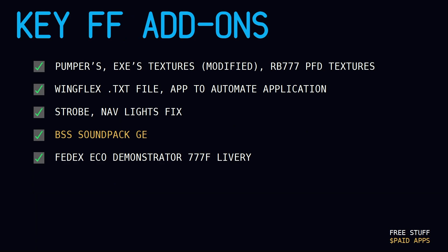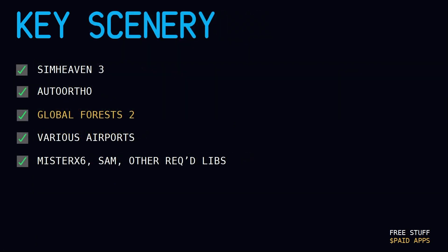And then last, we are going to be using the FedEx Echo Demonstrator 777 freighter livery from FS Cabral — I found it on Threshold X. We do have scenery that we're going to be using. I use SimHeaven 3 and AutoOrtho. It does take a fair amount of space and some time to load up, but it really makes the scenery look great. I'm using a paid program called Global Forests 2, which makes sure that you have the right trees in the right part of the year and part of the world, and generally makes things look a little bit more realistic. I have various airports — those are free generally, or payware depending on what you like — and the required libraries from Mr. X, SAM, and other required libraries.